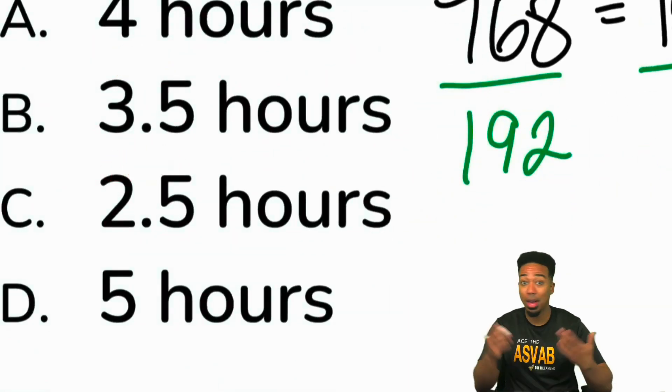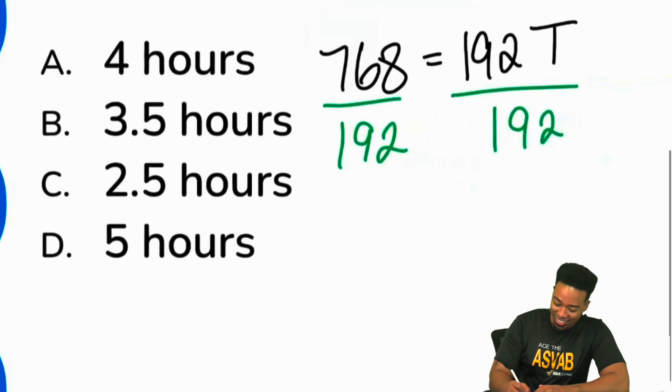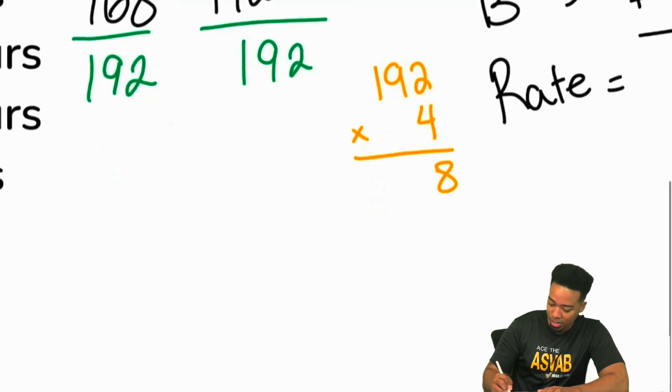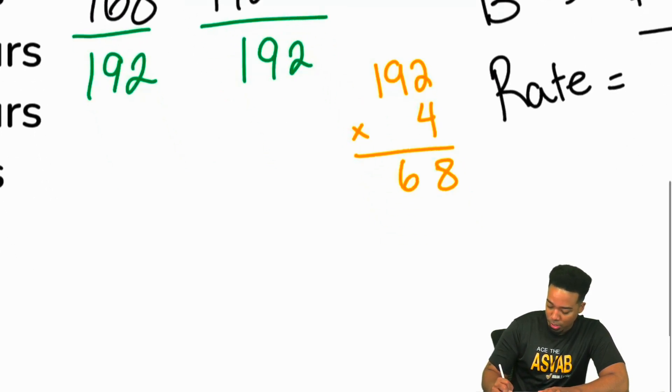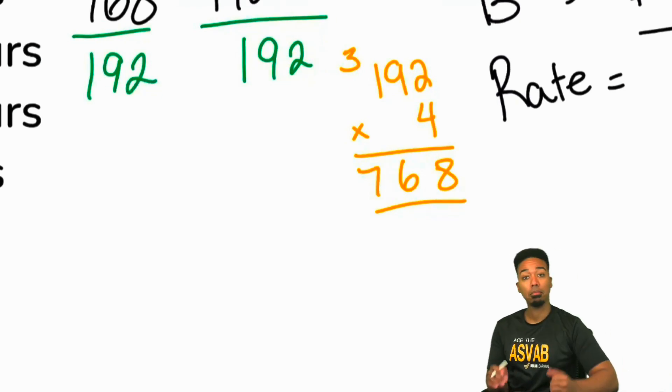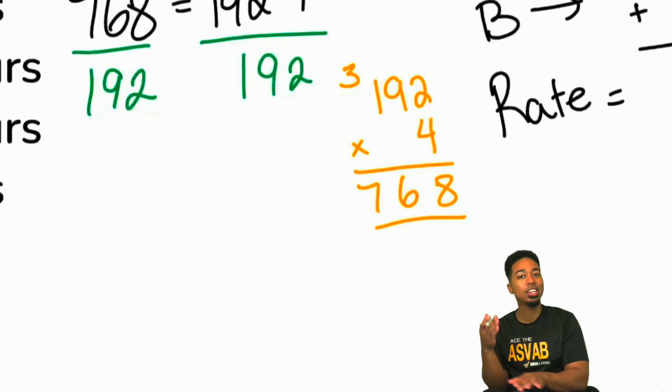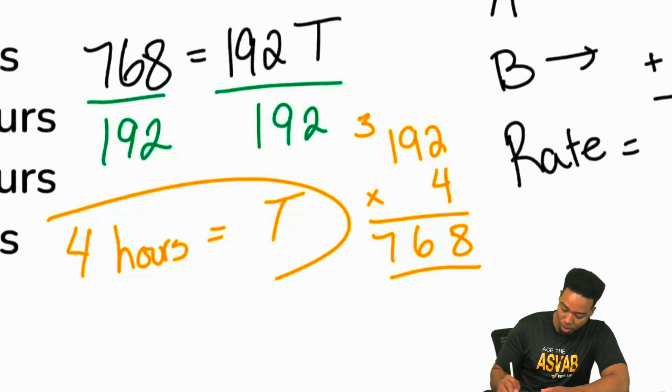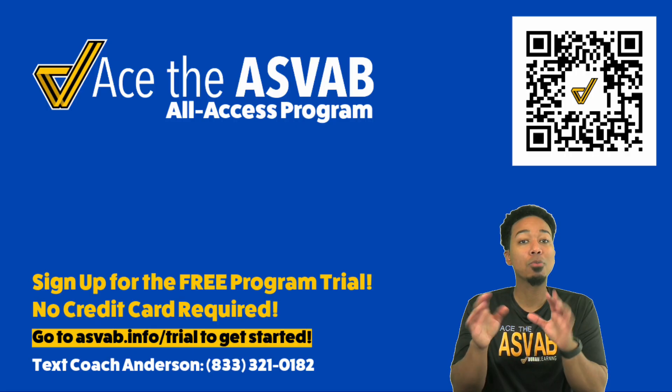Here we go, we'll try it out. 192 multiplied by 4, and we get 2 times 4 is 8, 9 times 4 is 36, 1 times 4 is 4, carry the 3 is 768. Oh my gosh, we got lucky. You know, we could have been off by a little bit, but we got lucky. And so here, boom, there it is. The time is going to be four hours.